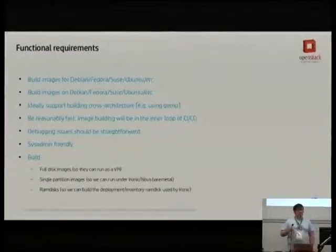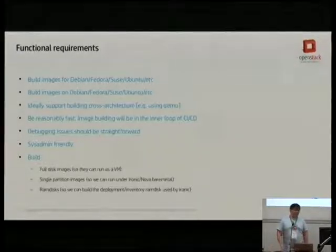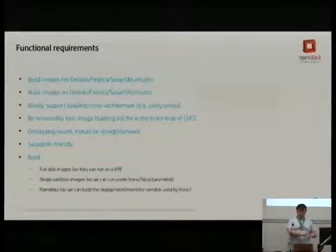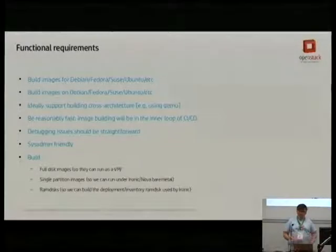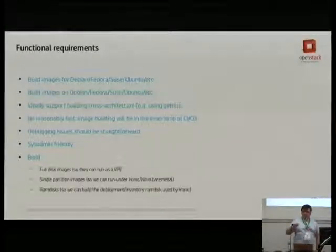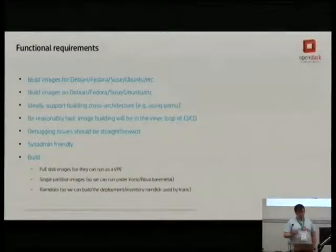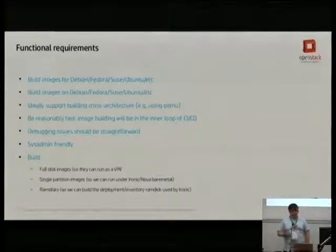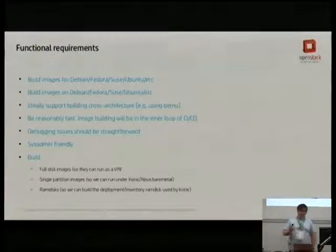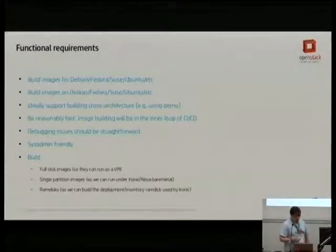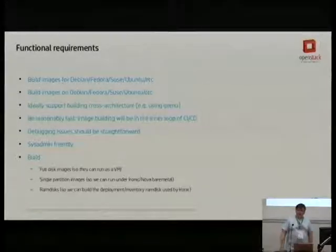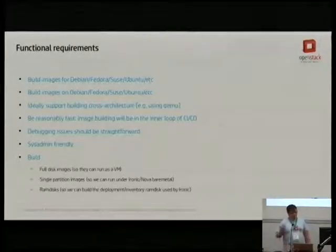It needs to be fast — we're in the inner loop of CI/CD. If it takes half an hour to build an image, your minimum test run is going to be half an hour before you even consider deploy time. We can build OpenStack images with all of OpenStack in them in about eight minutes, and we haven't done all the optimizations we think are possible yet. And it needs to be debuggable — if you can't figure out what's going wrong, you're going to regret using this tool.